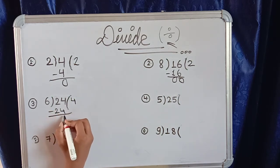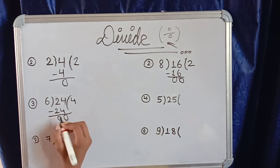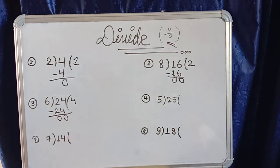We minus 4: 4 minus 4 is zero, 2 minus 2 is zero. Now let's go to question number five.